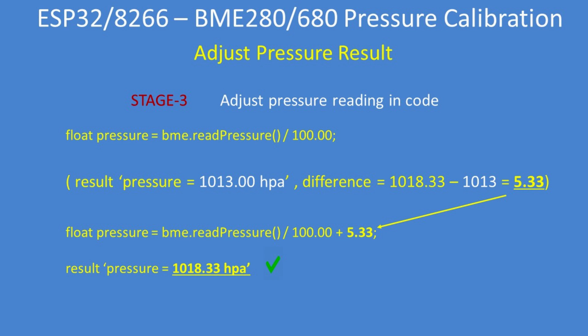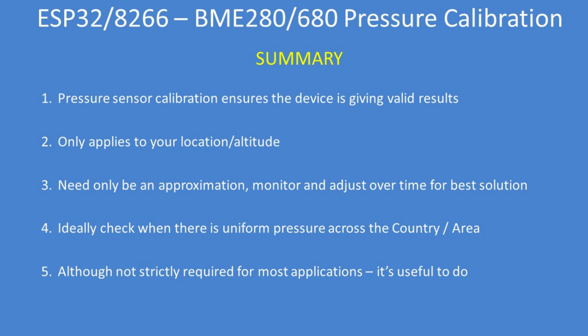And that's how you can calibrate the sensor. In summary, calibrating the sensor gives you valid results, but it only applies to your location and altitude. It's based on an average of surrounding, very accurate METAR stations, but it needs only to be an approximation. You can monitor it over time, check the offset is remaining constant, and ideally check when there's a uniform air pressure across your region. Although it's not strictly required for most applications, it is definitely useful to do so.